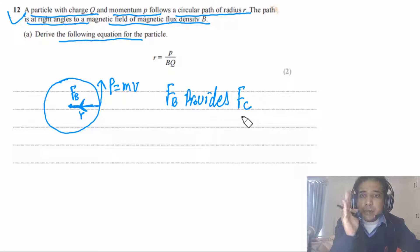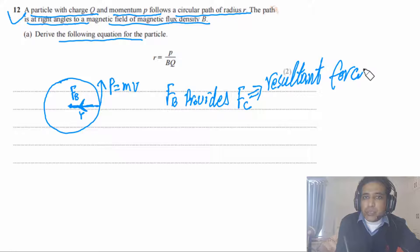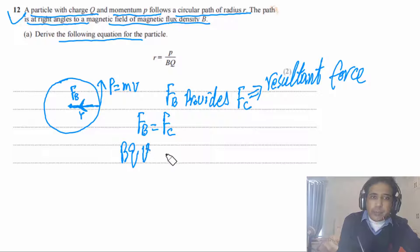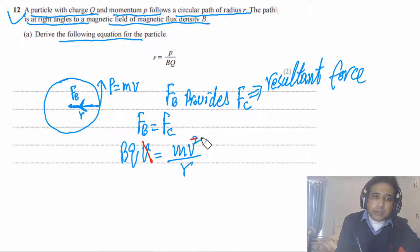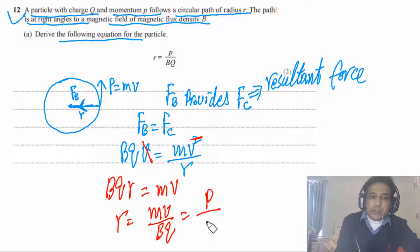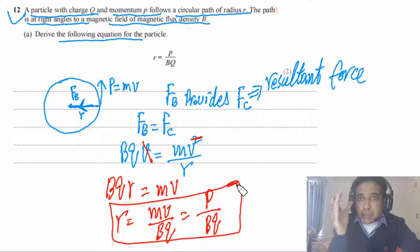Cancelling v from both sides: BQr = mv. Since mv = p (momentum), we get r = p/(BQ). Centripetal force is not a separate force — it is just the resultant force when a body moves in a circle. In this case, the magnetic force provides the centripetal force.